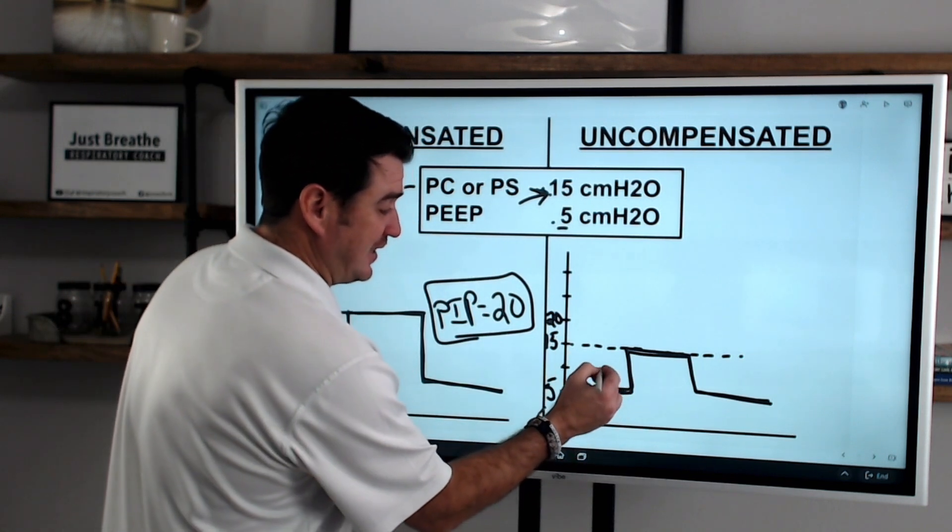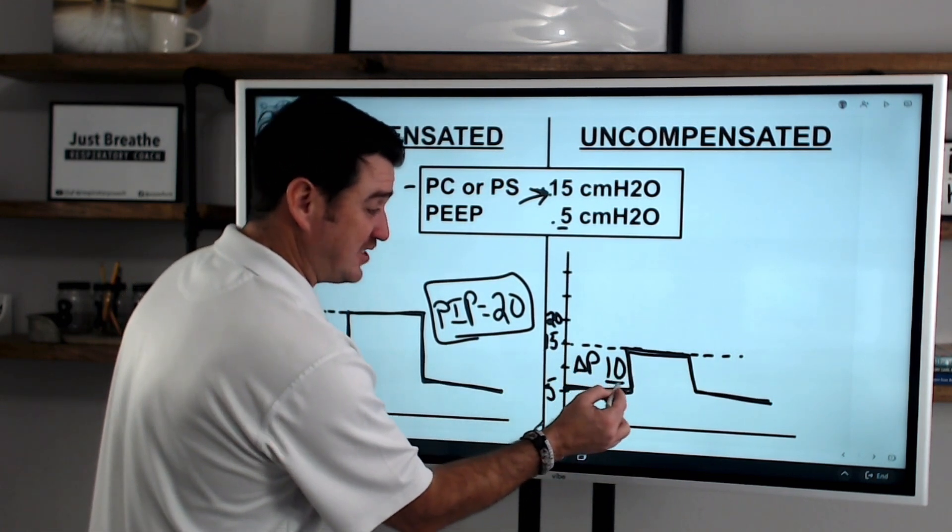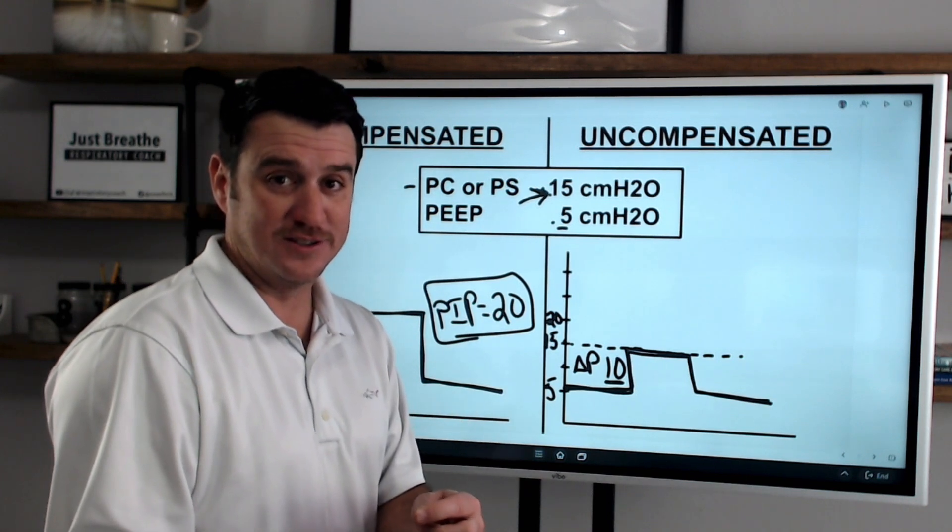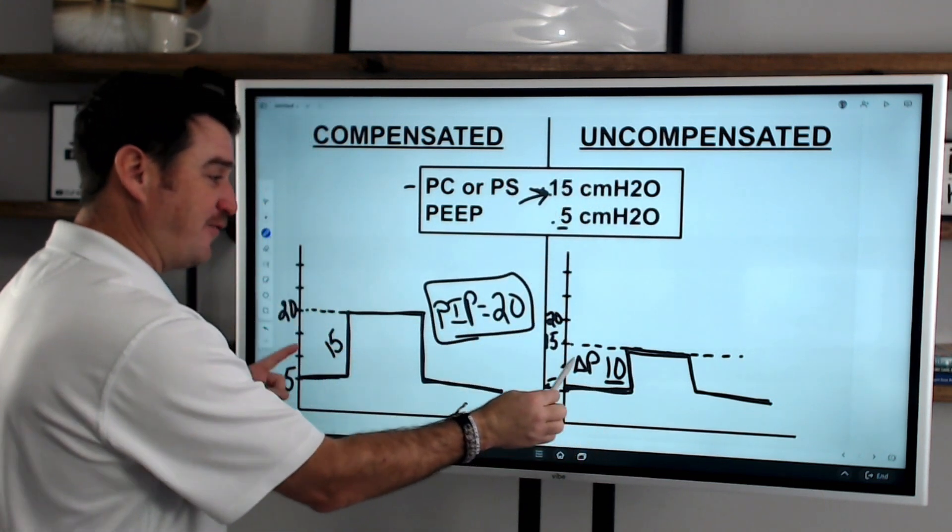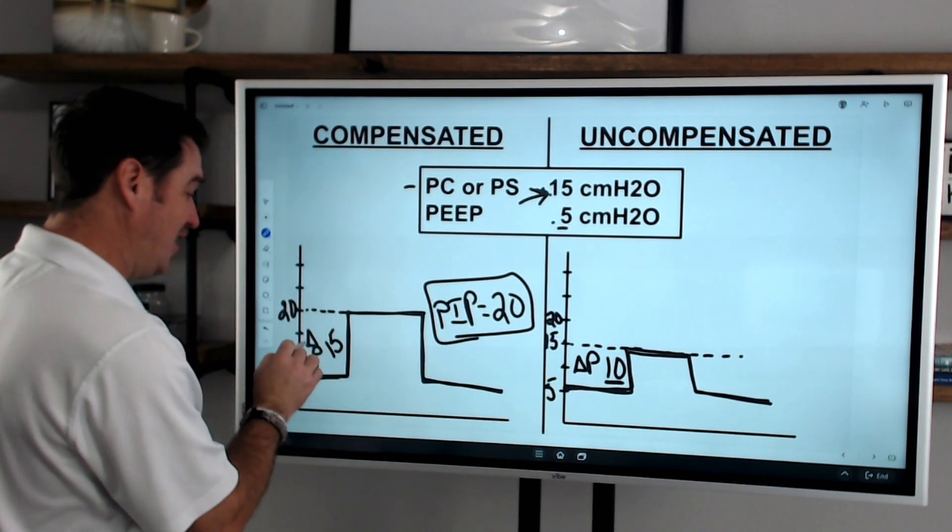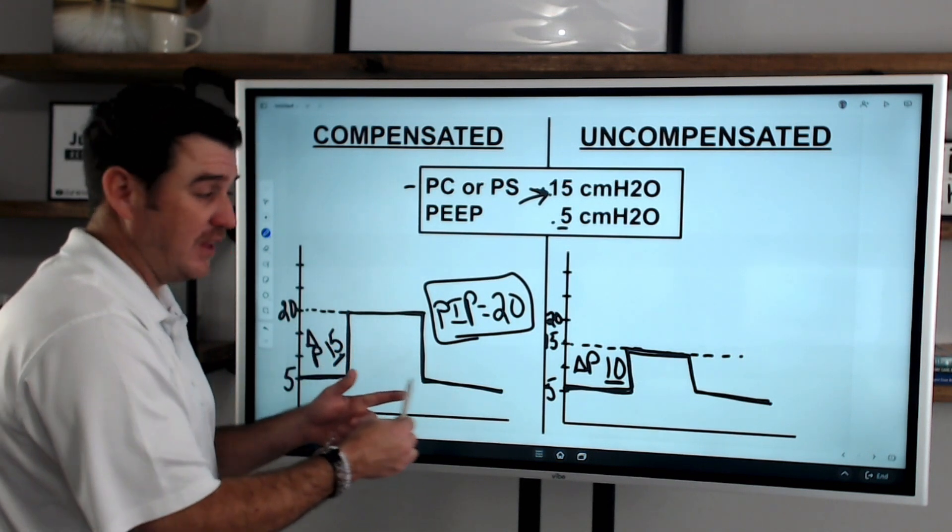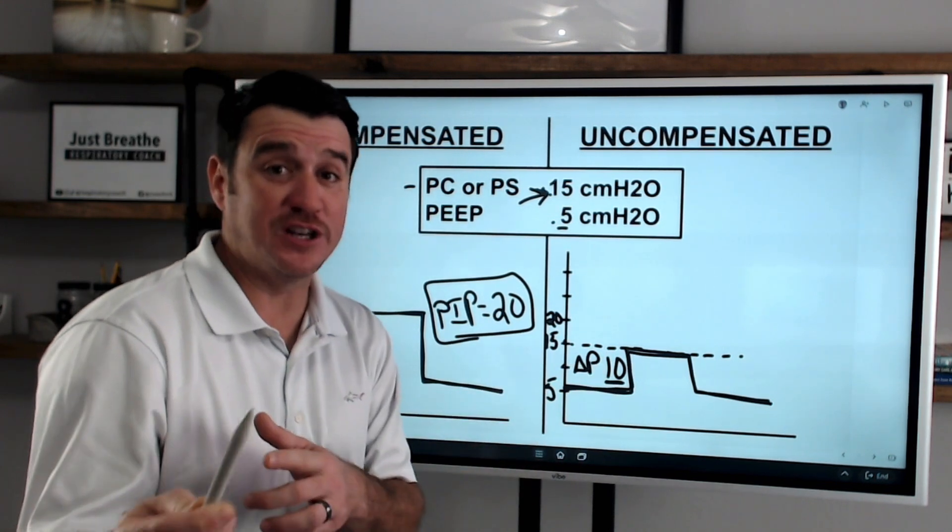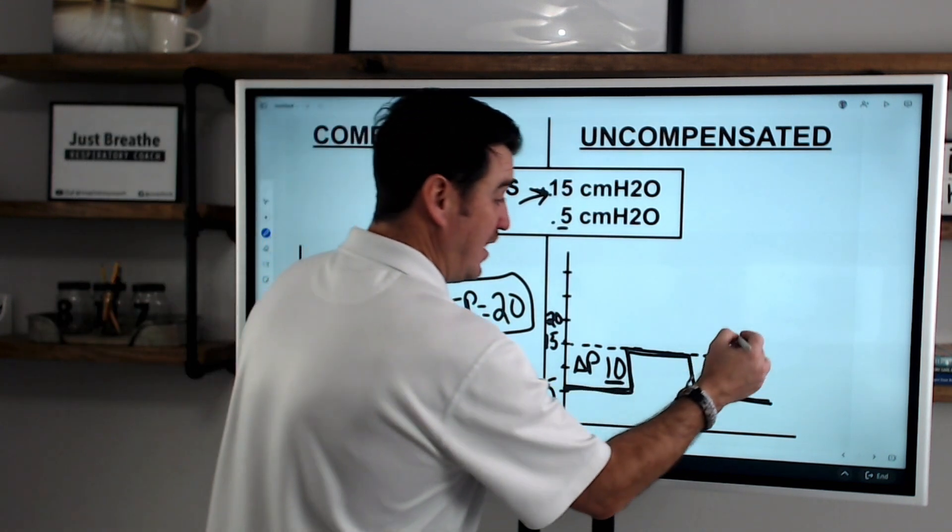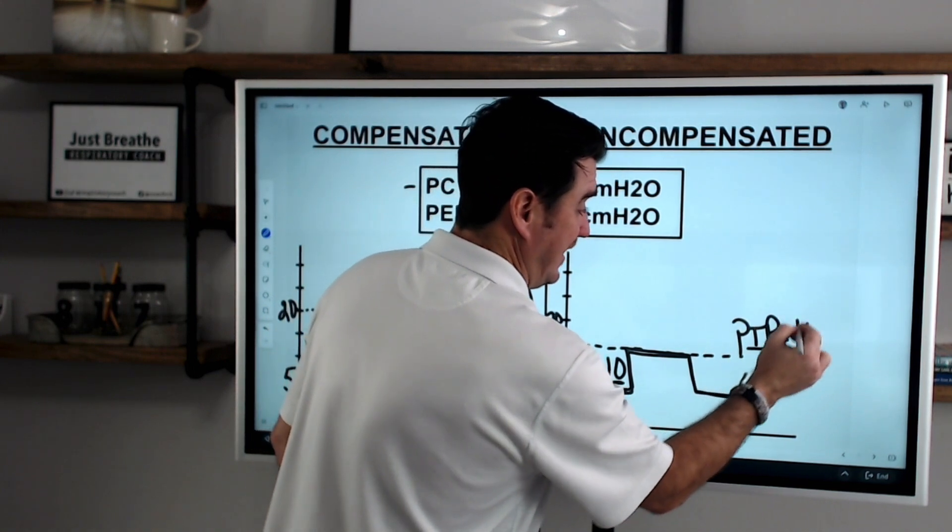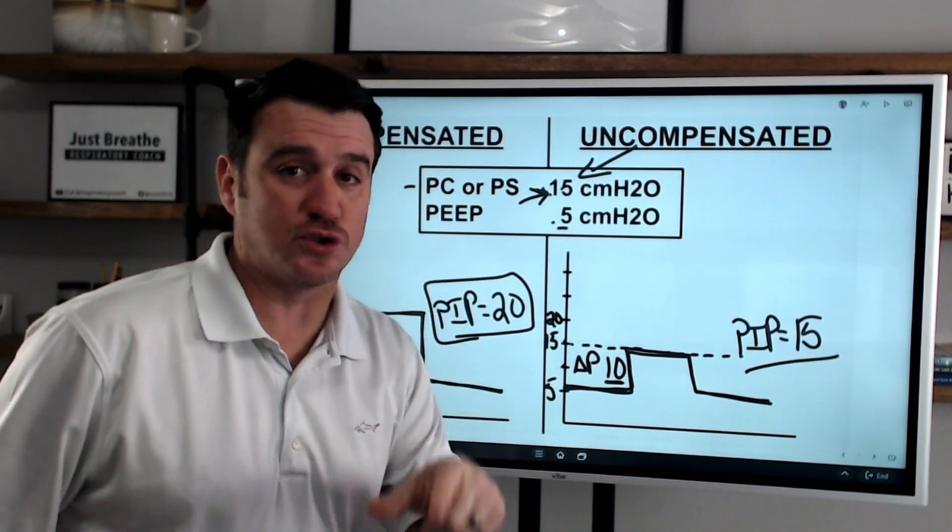Now, the reason this is important is if you look at this, we only really got a delta P here of 10 because we started at 5 and we went up to 15, that's only a difference of 10. So you can see here where while these settings are the same, what's actually happening for the patient is not the same. You see over here, our delta P was 15. This over here will result in a greater tidal volume than what we will get over here and we have to know that. So again, over here we put the 15 on top of the 5, that gave us a PIP of 20. Over here, our PIP is 15 because of an uncompensated ventilator, the pressure control you set is the pressure control that will be delivered.